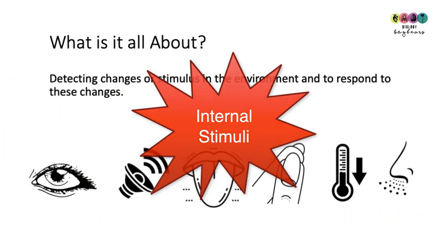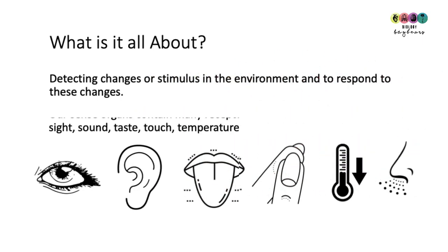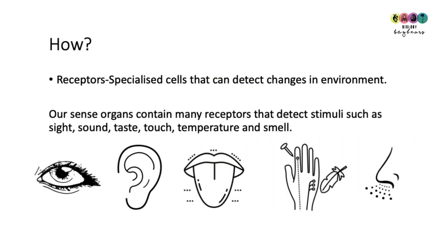But not forgetting that many of the stimuli are internal — inside the body. The reason why our body can detect these changes is because of receptors: specialised cells that can detect these stimuli.